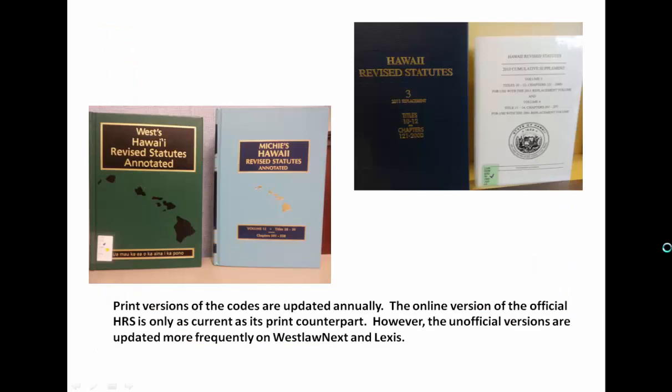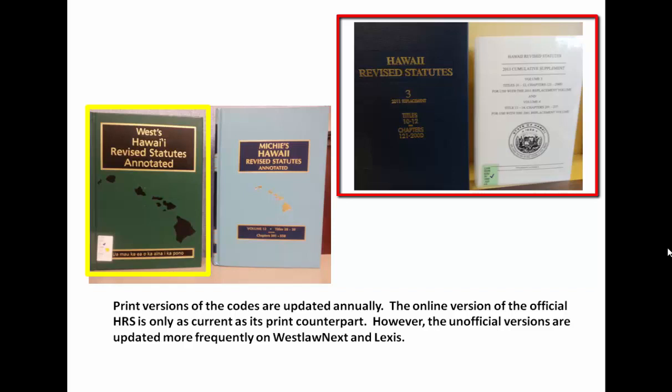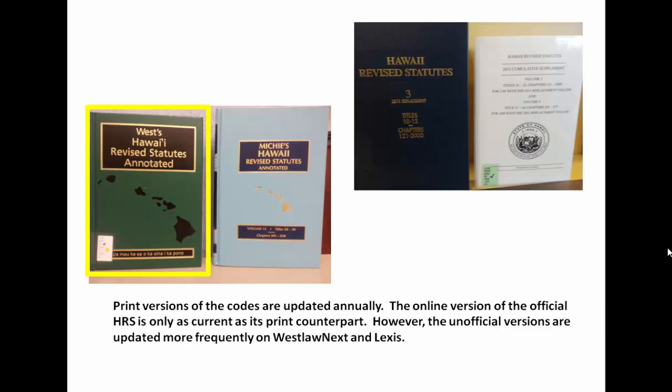The Hawaii Revised Statutes are also republished by West and Lexis. The West version, which you will also find on Westlaw Next, is called West Hawaii Revised Statutes Annotated. This is the version of the Hawaii statutes that we will be using in class this semester. The Michie's Hawaii Revised Statutes Annotated is published by Lexis, and this version is on Lexis Advance in online format.